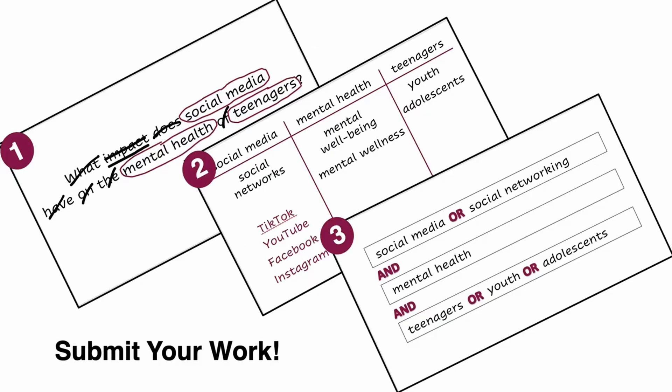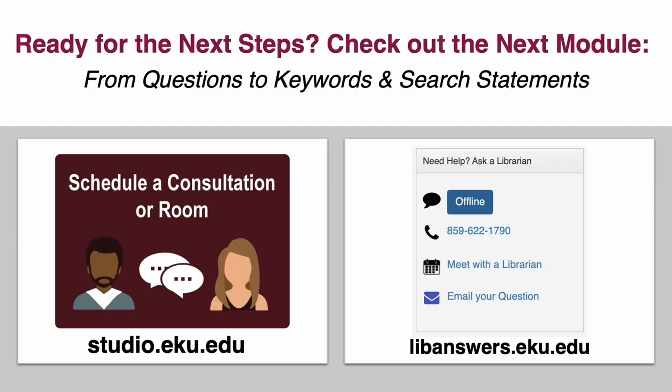Now that you've identified your research topic's keywords, brainstormed alternative keywords, and created your first search statement, submit your work for all three steps. Then, when you are ready, head over to our next module to learn how to use your search statements to find sources using library databases. Need more help? Consider talking to your instructor, making an appointment with a Null Studio Consultant, or chatting with a librarian to work on your keywords and search statements. Good luck!